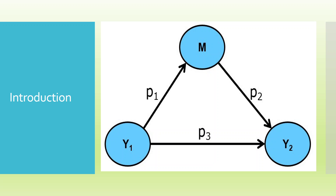You can see here that there are three constructs: Y1, Y2, and M. In my previous video, we already discussed the direct effect — Y1 affecting Y2 directly — which is denoted by P3. Now there can be another scenario in which Y1 affects Y2 through some mediator: Y1 affecting M, M affecting Y2. So the indirect effect is P1 multiplied by P2.